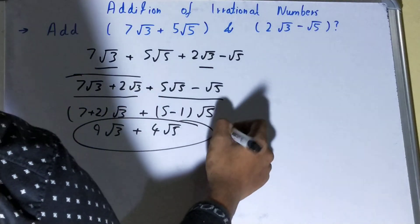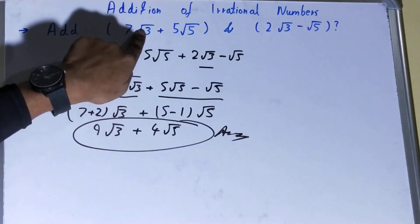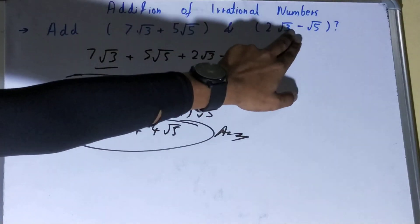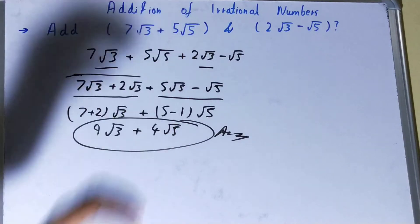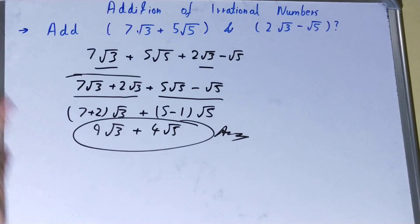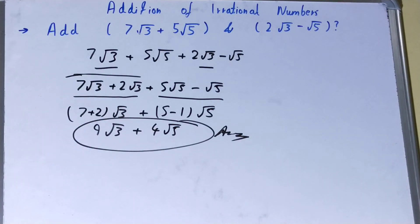will be your answer. Okay, so what we learned from this is that we can add the same rooted numbers, but we cannot add different root numbers. Like √3 and √5 cannot be added, but √3 and √3 can be added by just adding the coefficients and taking the root as common. Okay, so this